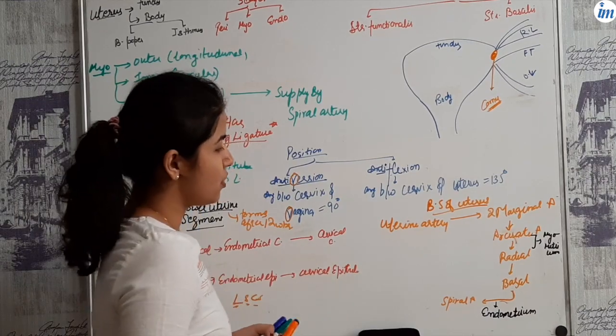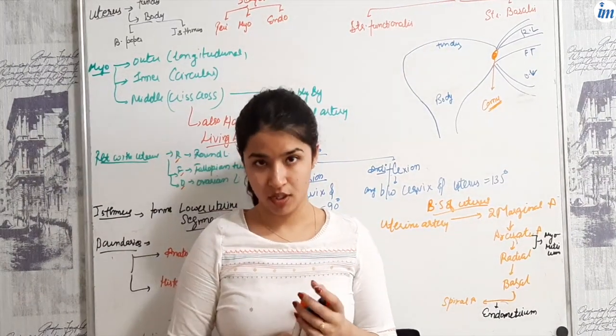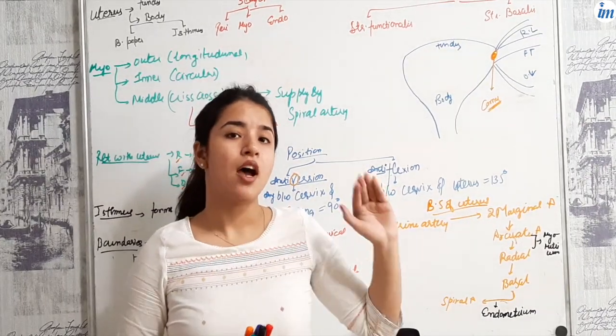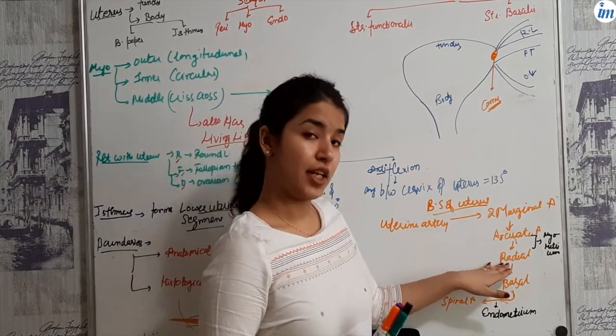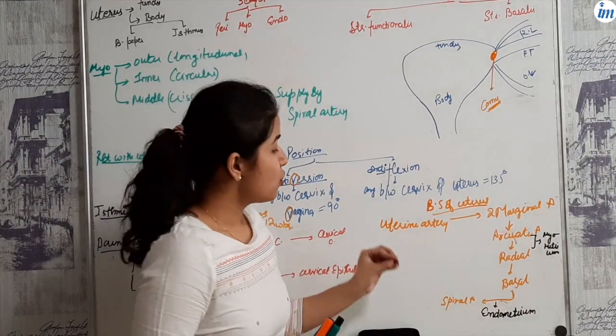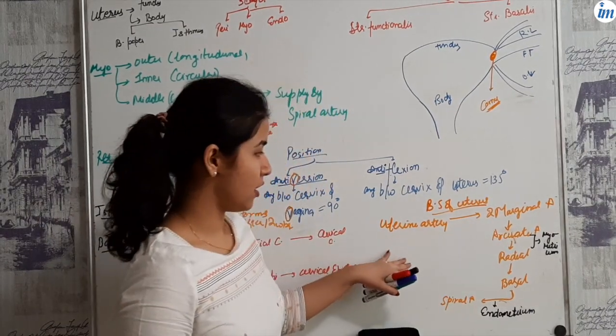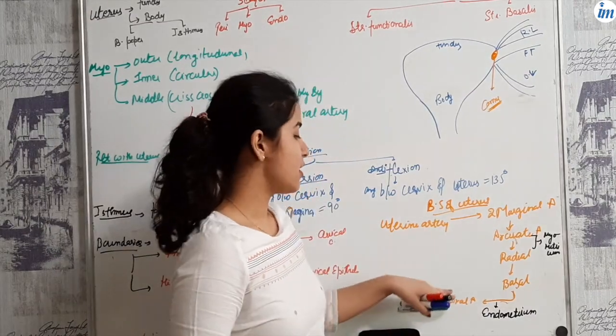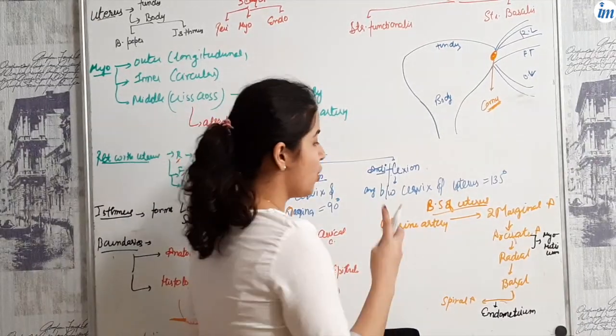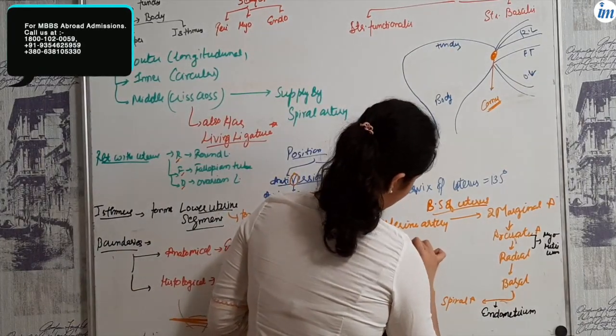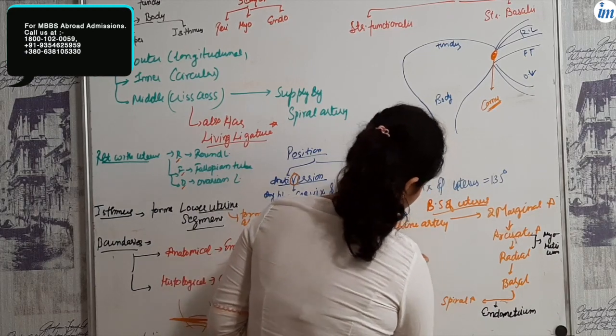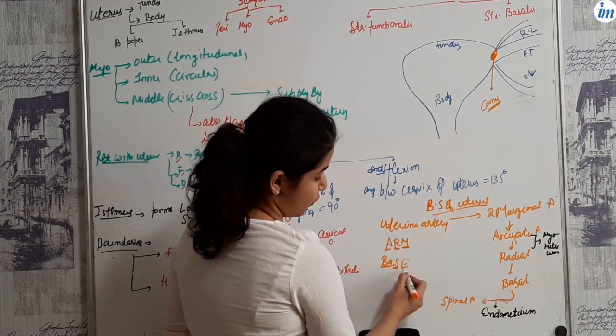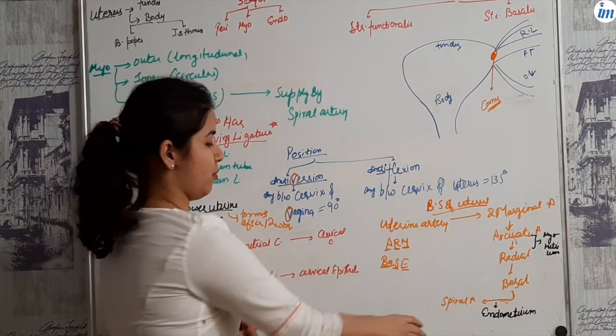What is the blood supply of the uterus? Generally, the uterus is supplied by the uterine artery and the ovarian artery. The uterine artery divides into two marginal arteries which further divides and gives arcuate artery, then radial artery, then basal artery and then spiral artery. Arcuate and radial supply the myometrium whereas basal and spiral supply the endometrium. Remember it by the mnemonic ARM-BASE: A for arcuate, R for radial, M for myometrium, B for basal artery, S for spiral, E for endometrium.